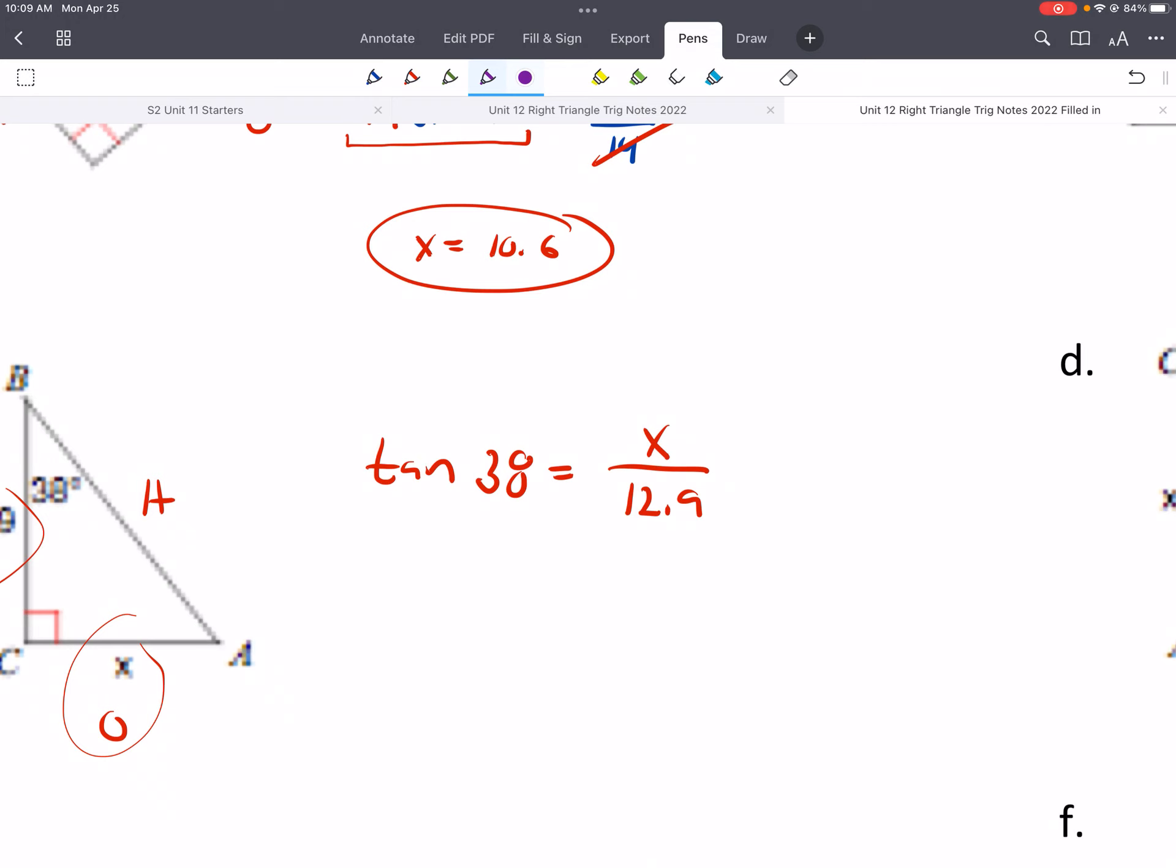So set it up, and then just multiply both sides by 12.9. Can I expect to see the work? I know I've had lots of students like, oh, I know how to do it. I can just do it on my calculator and write my answer. Yeah, you can, but I expect you to write down what you put into your calculator. All right, because you're going to do it anyways. Just copy it down. So 12.9 tangent of 38. So I ended up getting X equals 10.1.